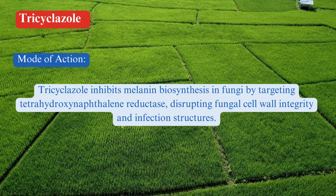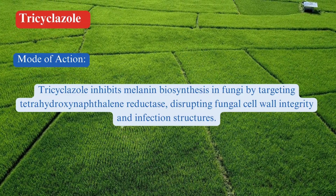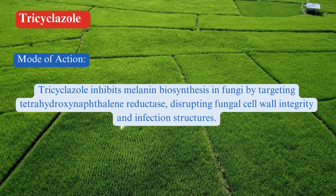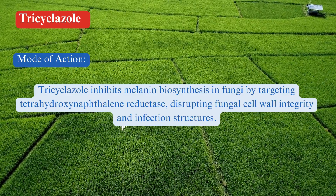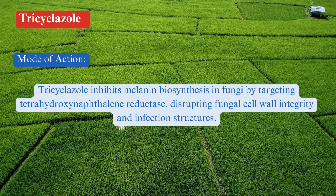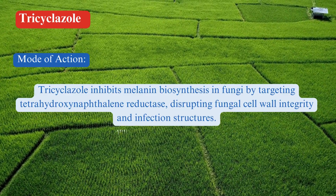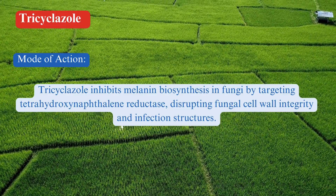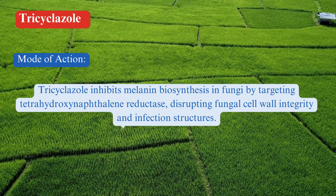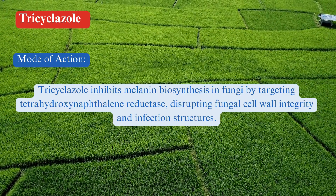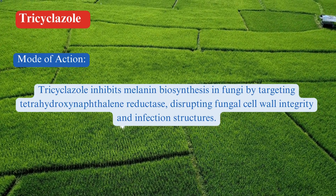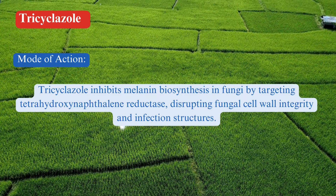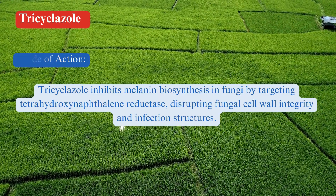By preventing melanin formation, Tricyclozol disrupts the development of appressoria — specialized fungal structures used to infect plant tissue — thereby reducing the ability of the fungus to infect the plant.